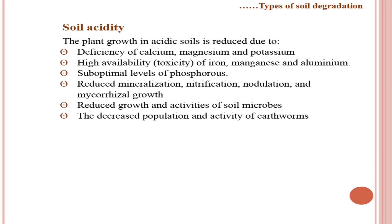The population and activity of earthworms also decreases in acidic soils. Earthworms are indicators of soil fertility and prefer slightly acidic to neutral pH. Their burrowing activity and roles in enriching soil and increasing nutrient availability are reduced when soil becomes too acidic, minimizing their beneficial contributions to soil health.